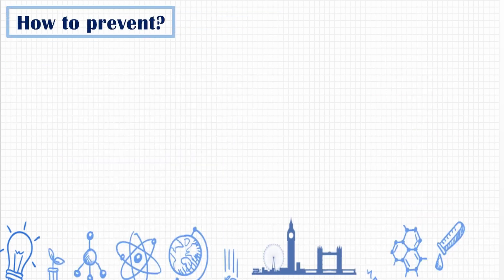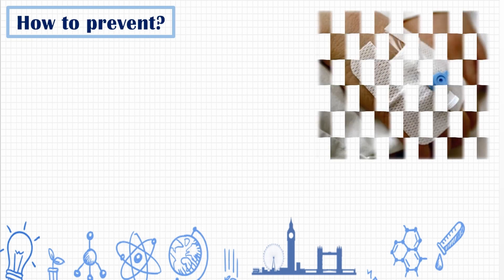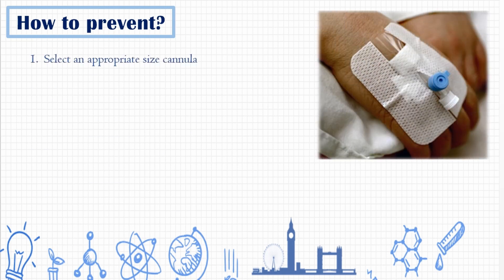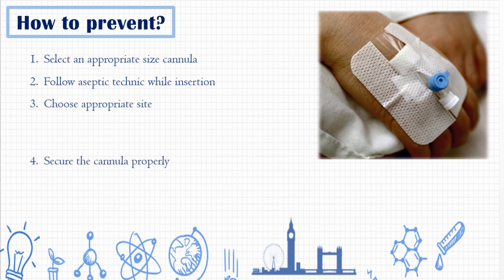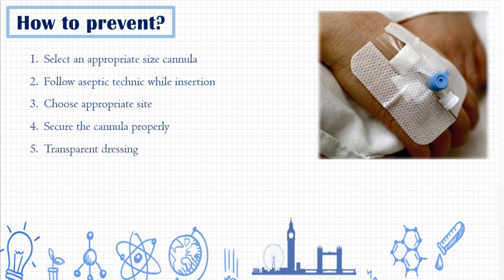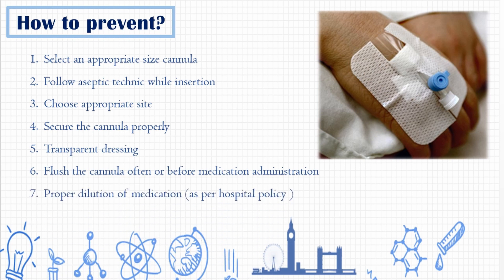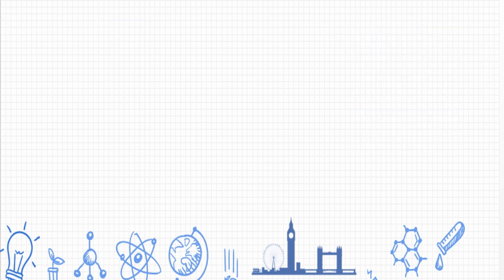Now let's see the ways to prevent phlebitis. First, choose the appropriate cannula size and site. Follow aseptic technique while infusing at all times. Secure the cannula site with transparent dressing. Flush the cannula often or before medication administration. Ensure proper dilution of medication as per policy, and label the cannula with date and time to track the number of days used.